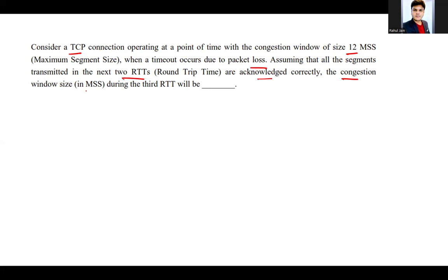correctly, the congestion window size in MSS during the third RTT will be? So basically, when the first MSS is sent in the first RTT and gets the acknowledgment, thereafter two MSS will be sent.